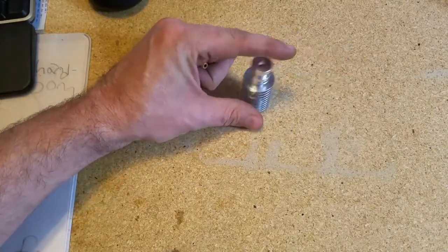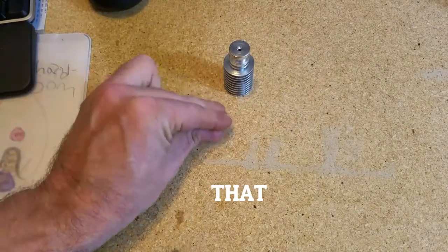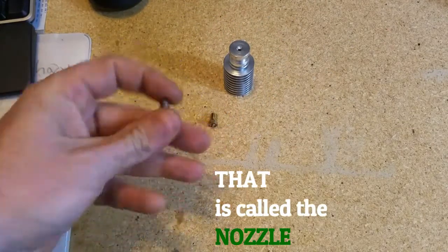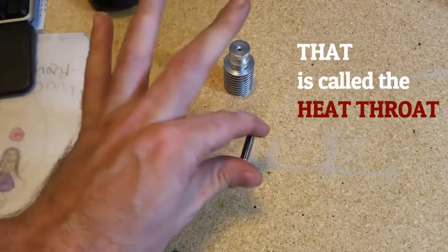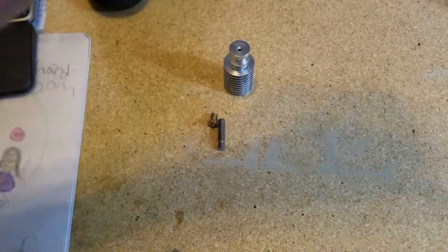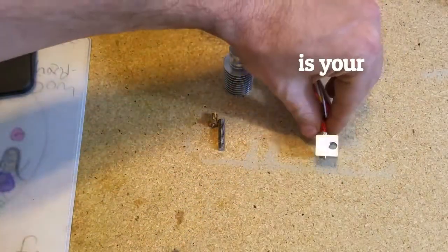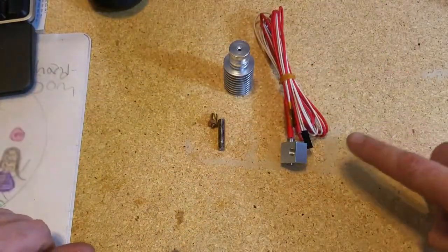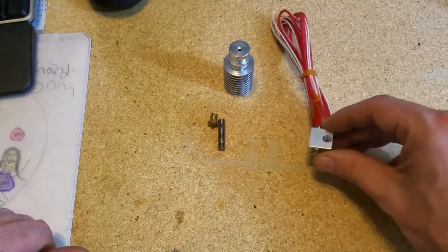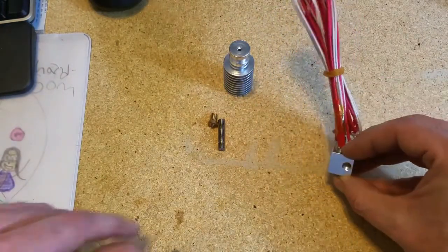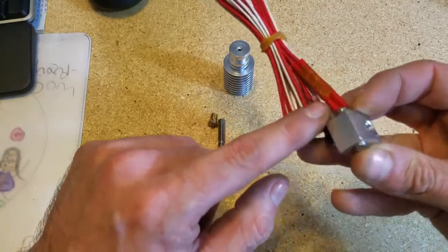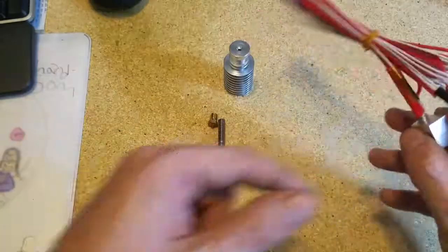That is the body. That is called the nozzle. That is called the heat throat or throat, and this is your heat block. The metal tube inside is the heater or the heating element, and that little tiny wire right here is your thermistor.